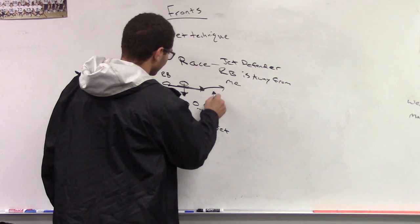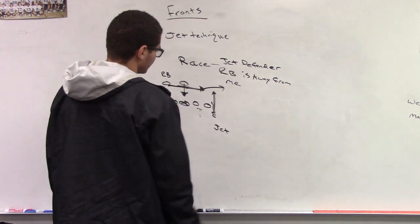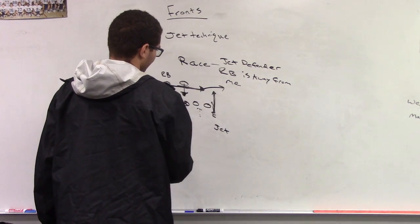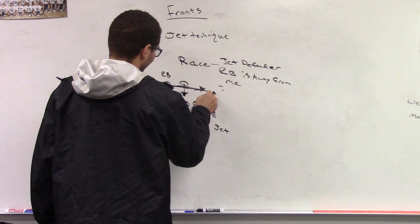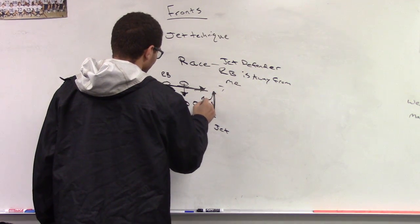The only way we can do that is if we get vertical up the field. If you stop one yard from the line of scrimmage, you are never going to get there. So you've got to get up to the heels of the quarterback. Once the quarterback declares that he's pulling the football, I can then fold back inside to make the play.